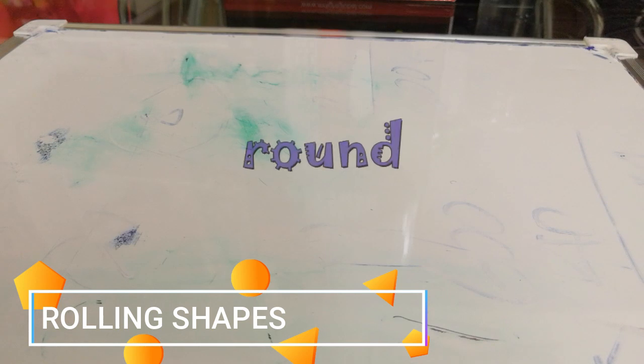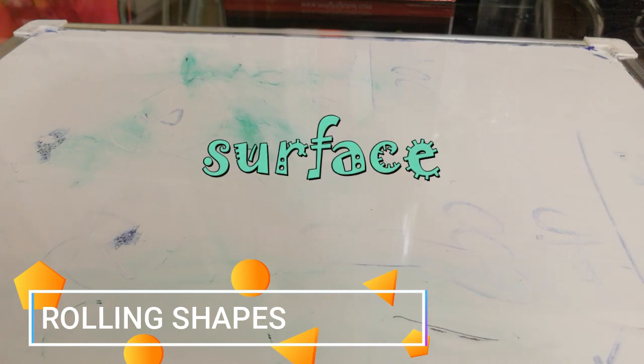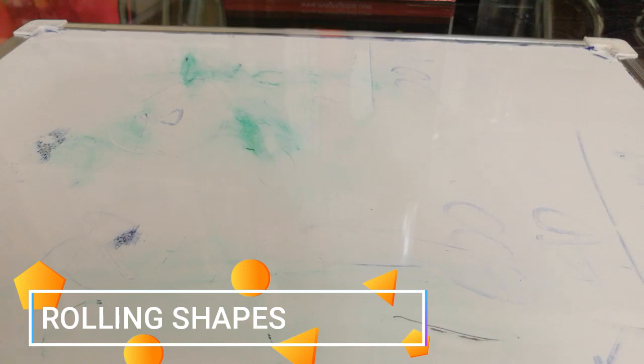First are the rolling shapes. Any object that has a completely round, curved surface can roll on any flat surface.